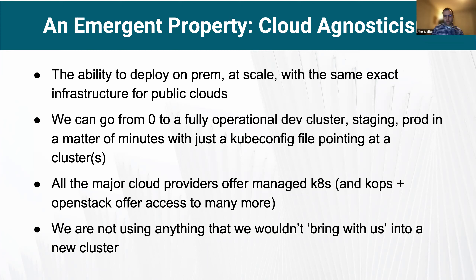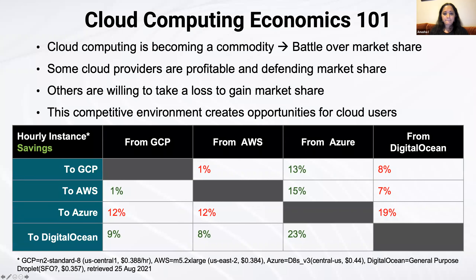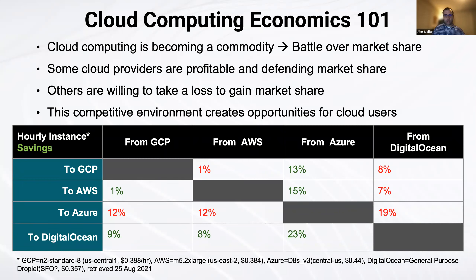We sort of had this moment of realizing we were cloud agnostic due to the requirements of the product. Our first avenue was the straight economic route. We realized that cloud computing is increasingly becoming a commodity — one vCPU on AWS is by and large the same as one vCPU on Google Cloud Platform. All these cloud providers are battling over market share: some are profitable and wanting to defend it, others are willing to take losses to gain market share. This fierce competition creates opportunities for customers and users.